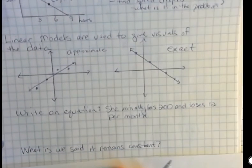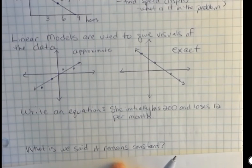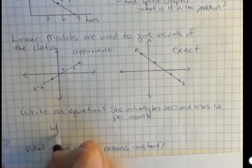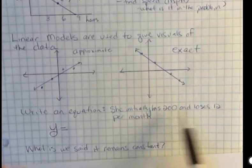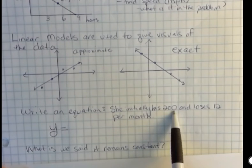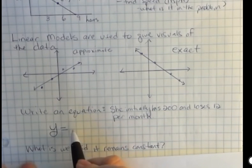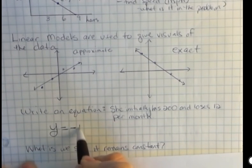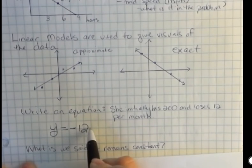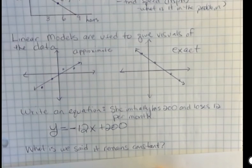Write an equation for this. She initially has $200 and loses $12 per month. What we're interested in is a slope intercept form. Which one of these is the slope, the 200 or the 12? Well, what she initially has is 200, and the initial is the y-intercept. She loses $12 per month. If you're losing, or you have a negative, or whatever, that's a negative slope. Negative 12x, she started with 200. That's how you would interpret that.